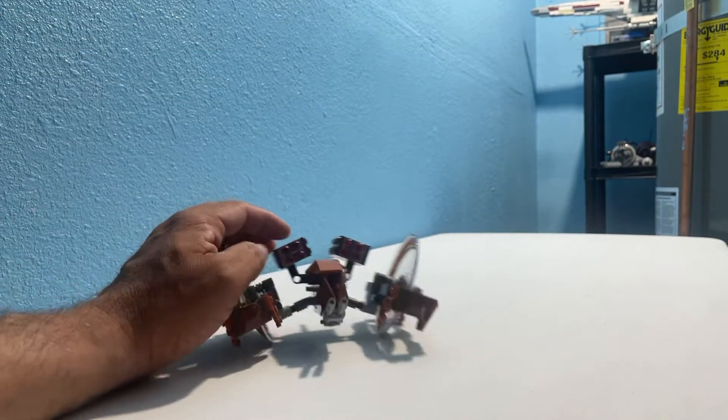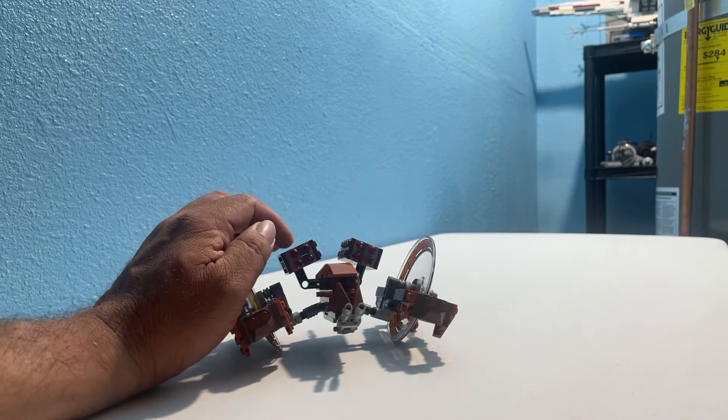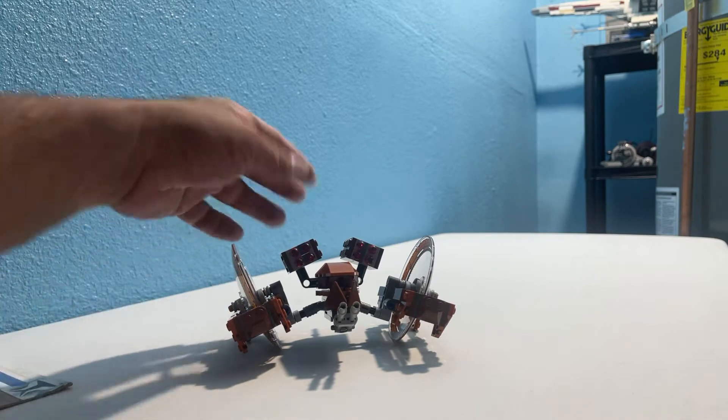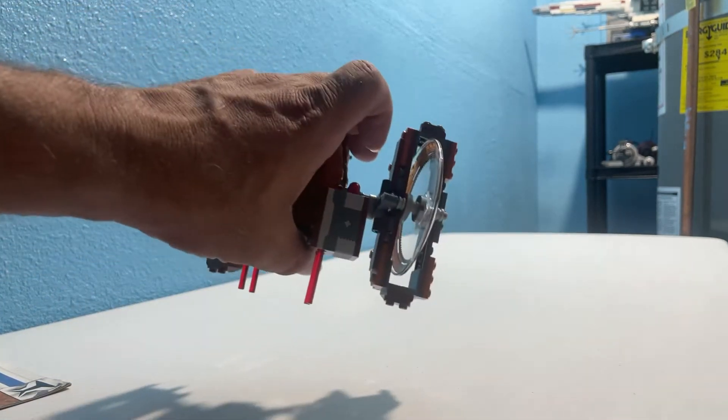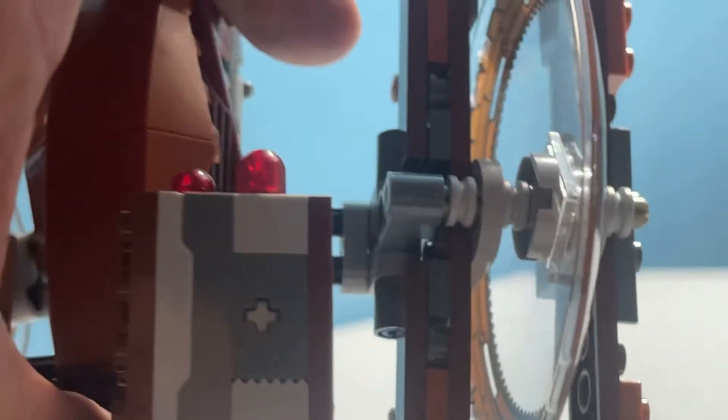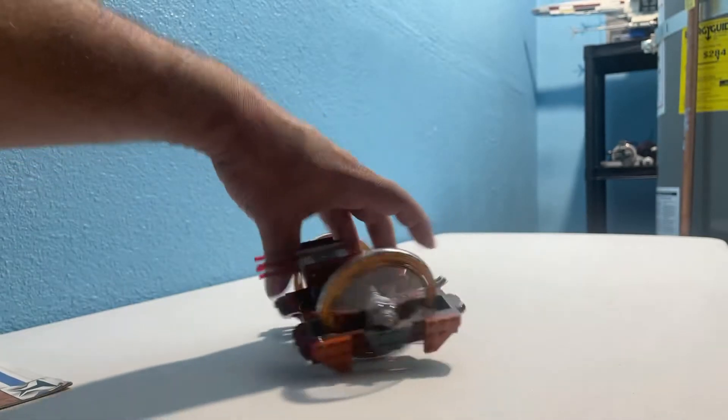It does have two flick fires on each side. Not flick fires. Spring-loaded missiles. And it has the fake ones. The reason it has the fake ones is because this is Technic built. See? So, you wouldn't be able to, you know, do four, unfortunately.